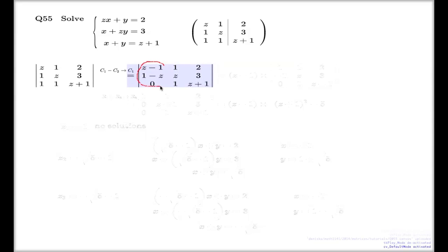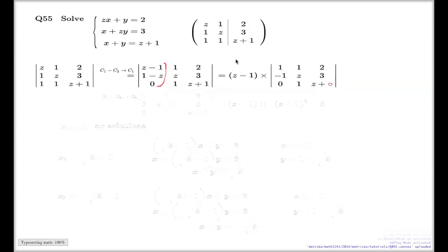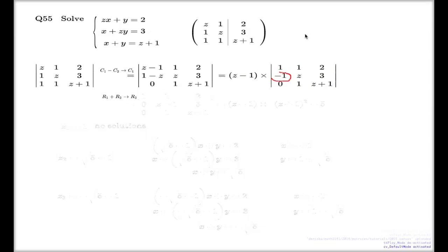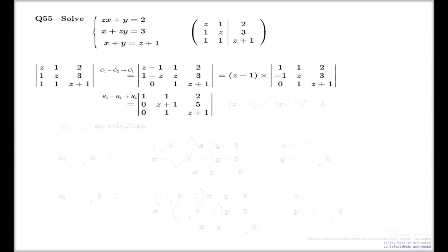Here's a common factor: (Z − 1). So (Z − 1) is my first factor in the factorization. Next I suggest doing another row reduction — R1 plus R2 — which will vanish one element. If I do that row reduction, here is the result.